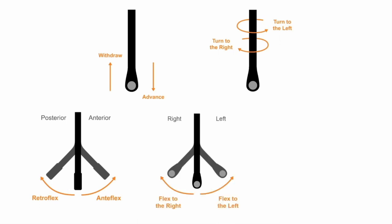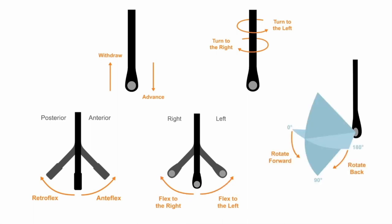And fourthly, we can flex the tip of the probe to the left or to the right. As well as these four physical probe manipulations, we can also adjust the angle of the transducer, which is housed within the tip of the probe. We can rotate the transducer so that the imaging plane itself rotates — forwards, increasing the imaging plane angle from 0 to 180 degrees, or backwards to rotate the imaging plane angle back down towards 0 degrees.